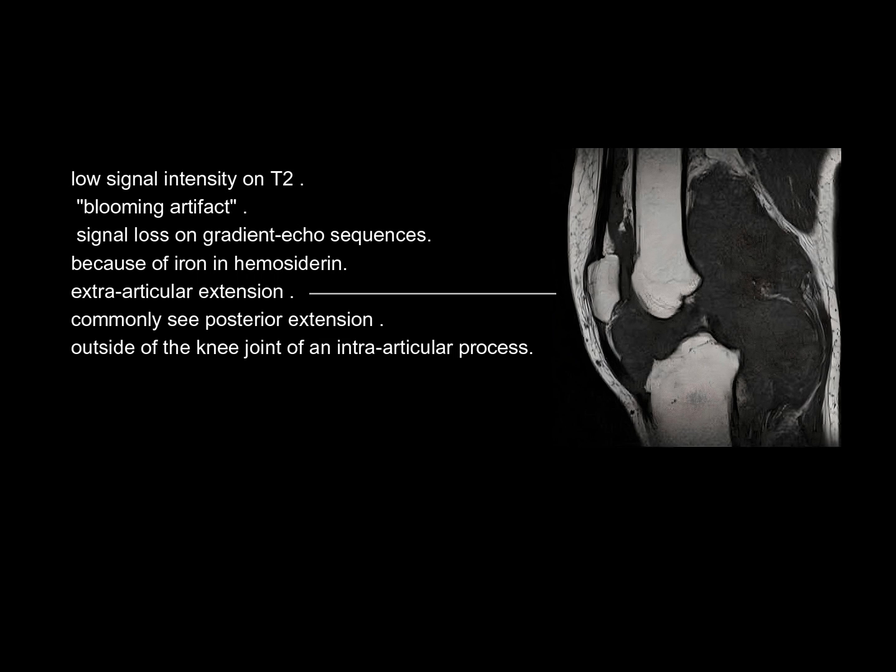On T2: low signal intensity and blooming artifact, with signal loss on gradient echo sequences because of iron in hemosiderin. Extra-articular extension is common, with posterior extension outside of the knee joint from an intra-articular process commonly seen.